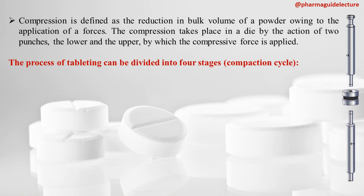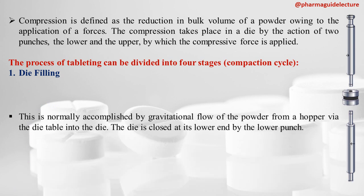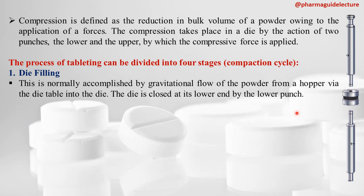The process of tableting can be divided into four stages, also called the compaction cycle. The first stage is die filling — powder is fed into the die.